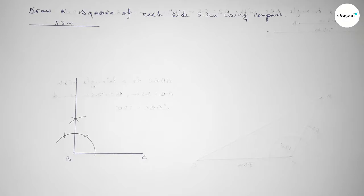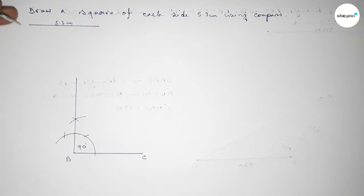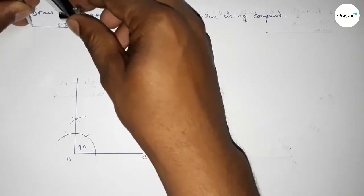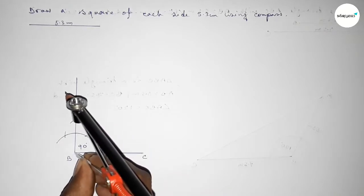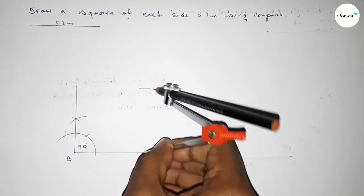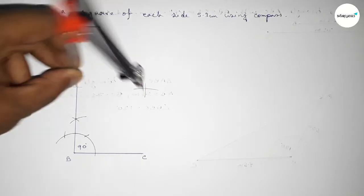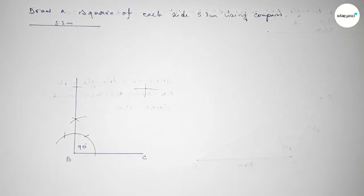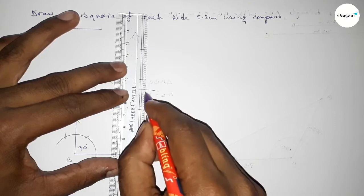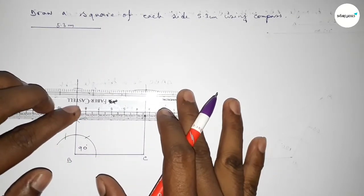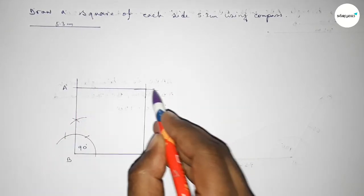Now taking the length of 5.3 centimeters using the compass, we put the compass on point B and cut an arc along the perpendicular. Placing the compass at that point and drawing another arc with the same length, we cut again. Both curves intersect at a point, and we join this side, then join the remaining side to complete the square.